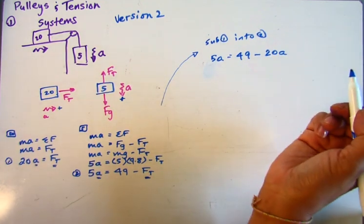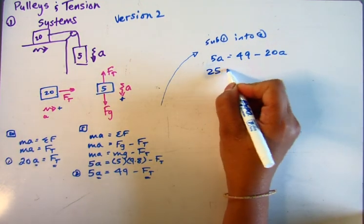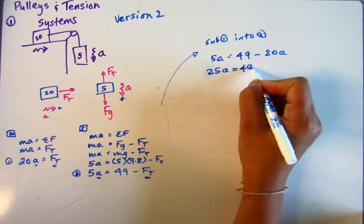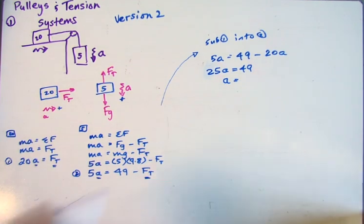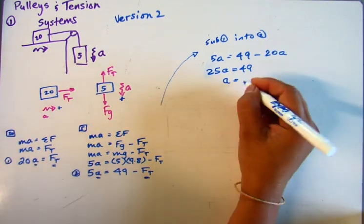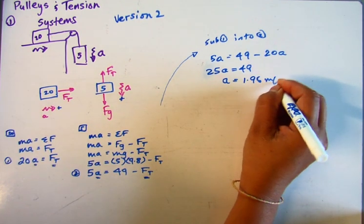So now I've got an equation with only one variable. So 25A equals 49, A equals 49 divided by 25. 49 divided by 25 equals 1.96 meters per second squared.